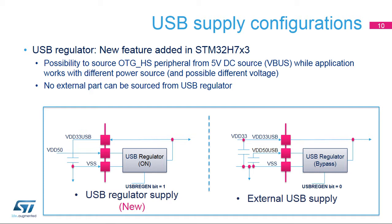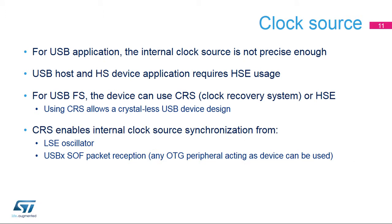Set bit USB-REGEN to zero when a USB peripheral needs to be supplied with an external 3V3 voltage source, as on older devices. To achieve high-speed communication, a high-frequency clock is required, so the USB clock is sourced from the HSE clock. For full-speed communication, a crystal-less design can be implemented based on the clock recovery system, or CRS.